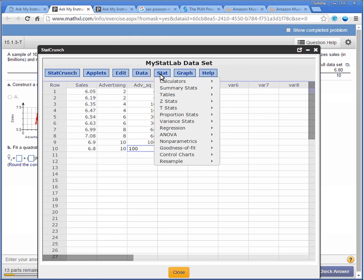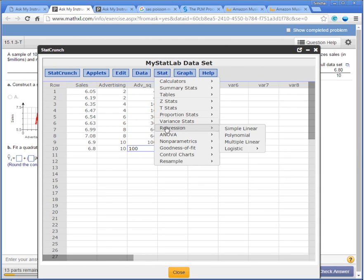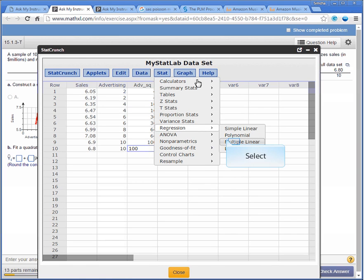Now we go to Stat. We want regression, but this time we want multiple regression, chapter 14, because we have two X's now, advertising and advertising squared. Click on that.